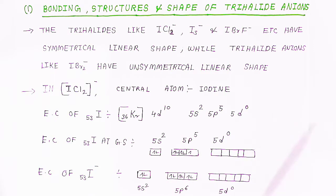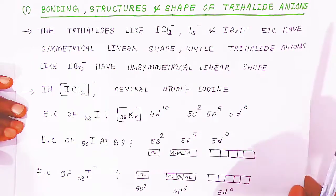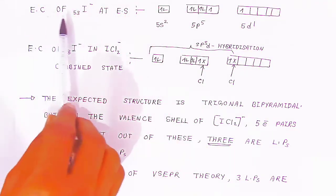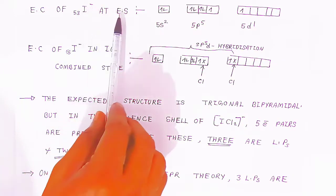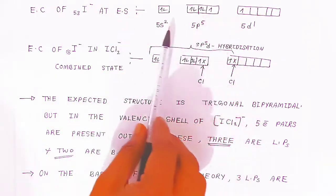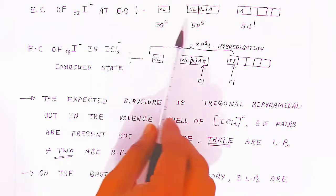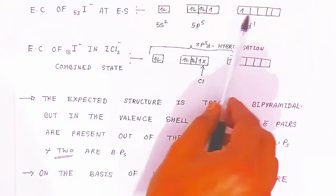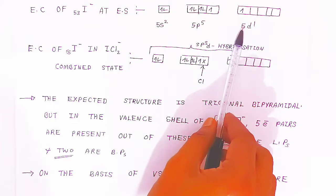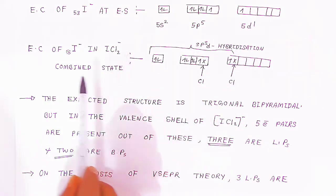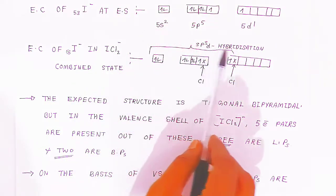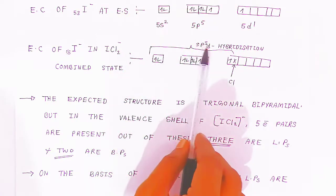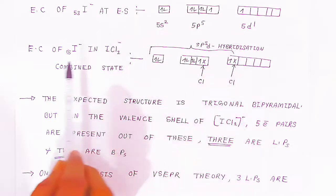When the chloride atom approaches the iodide, excitation takes place. The electronic configuration of the iodide (I⁻) at the excited state: one of the electrons will excite and go to the 5d orbitals, so the configuration becomes 5d¹. Then sp³d hybridization takes place when the chloride approaches.